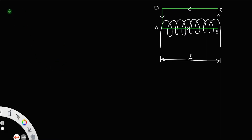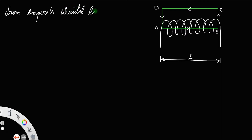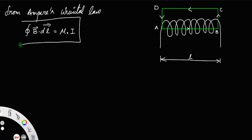Applying Ampere's Circuital Law, we have the line integral of B dot dL is equal to μ₀ times the total current I. This is the expression for Ampere's Circuital Law.